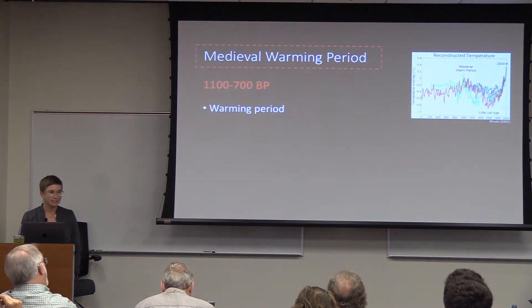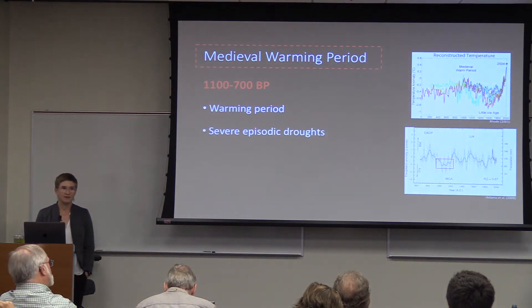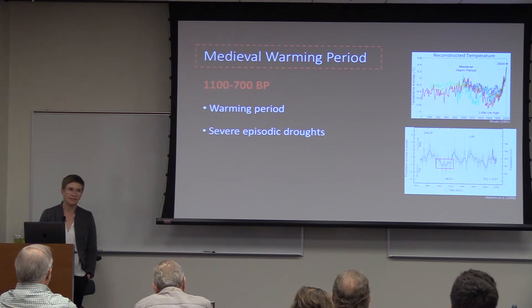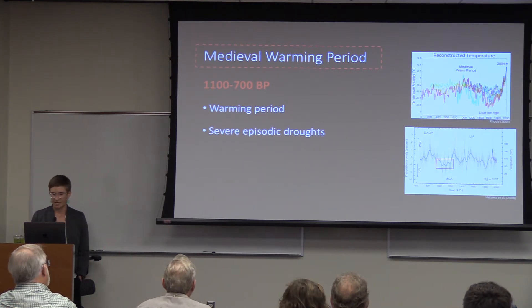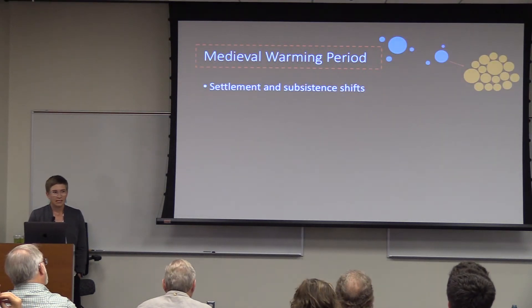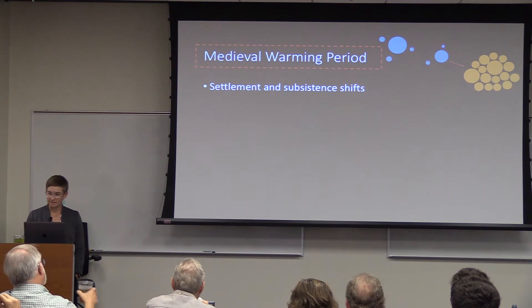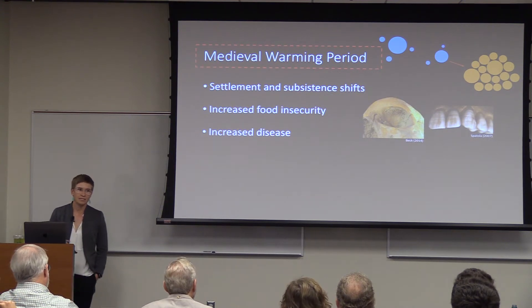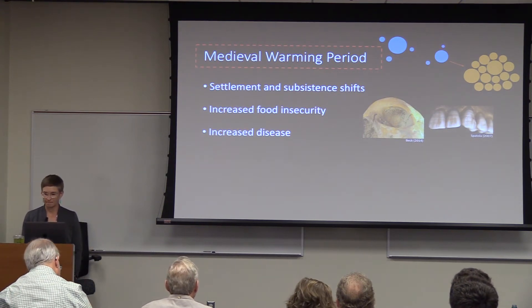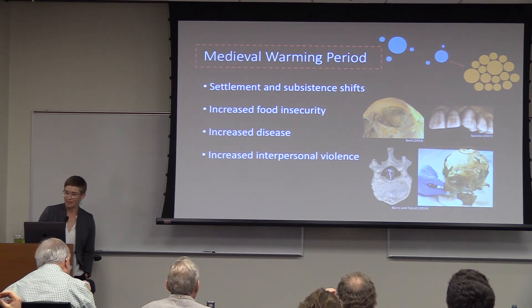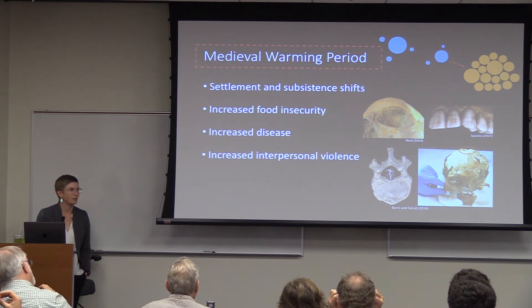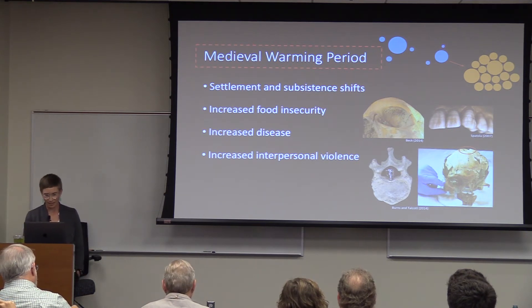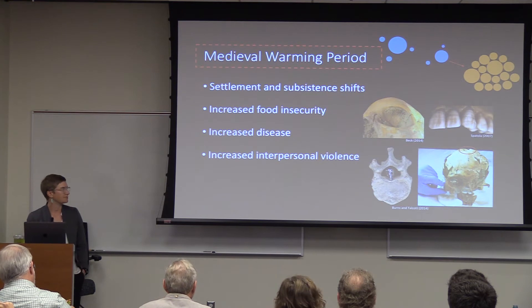The warming period is obviously associated with warming, and also with very severe episodic droughts that could last anywhere from 30 to 200 years — so in some cases, individuals could see things change dramatically, and not for the better, within their lifetime. Archaeologically, this is associated with drastic settlement and subsistence shifts, increased food insecurity, and increased disease visible in pathological conditions in skeletal remains. We also see dramatic increases in interpersonal violence — including an obsidian projectile point that bisected someone's spinal column, and serious blunt force trauma to crania.